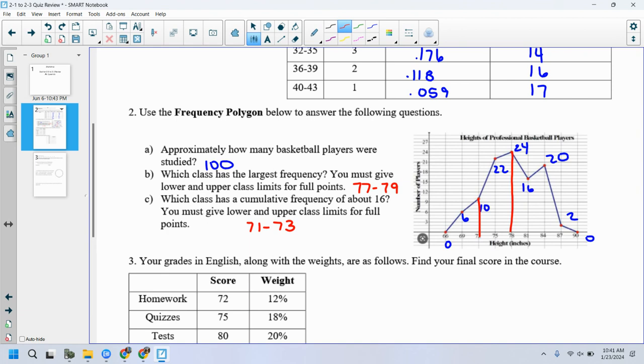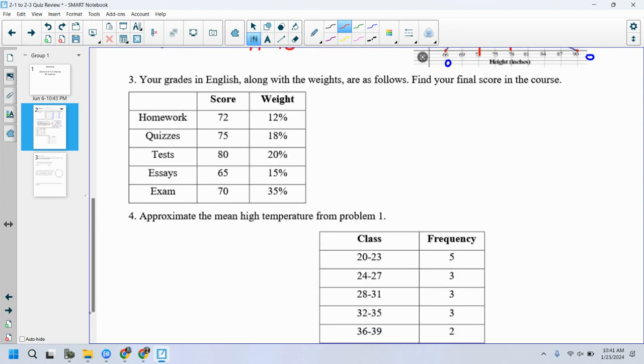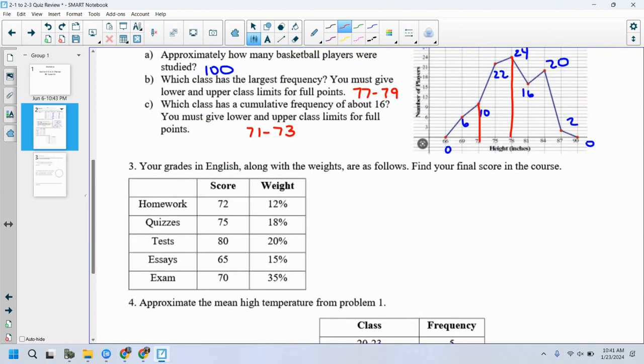All right, your grades in English along with the weights are as follows. Find your final score for the course. Remember the weighted mean is sum of X times W divided by sum of the Ws. Also, this is the first assessment that you will be getting these fancy formula sheets. I don't know if you use them, but you get them as the security blanket, but that's on here. Sum of X, W over sum of W. The nice thing here is that the sum of the W is just a hundred or one. However, you run the numbers there.